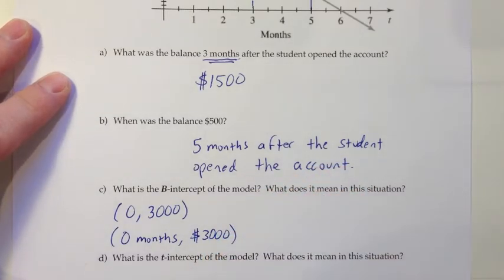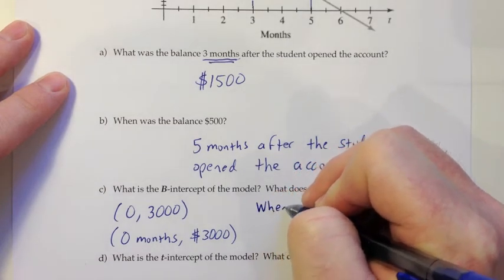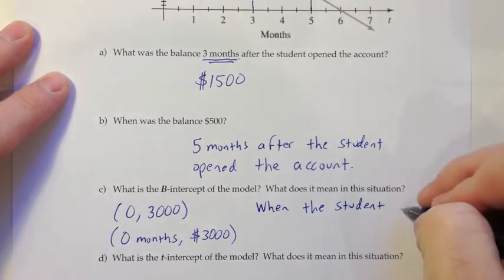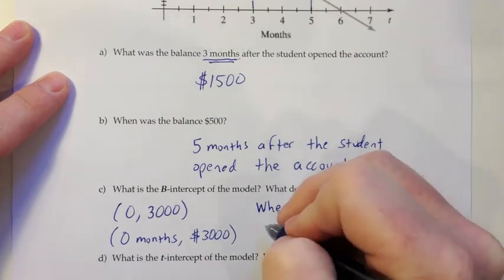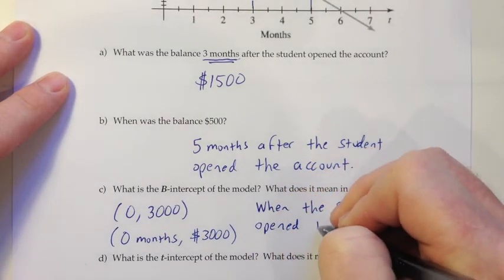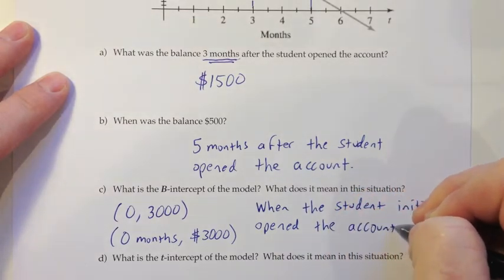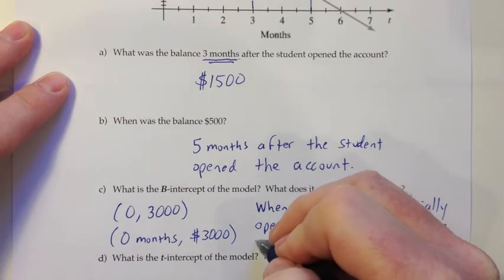So just thinking then about what that means. 0 months has gone by since they opened the account. So this means when they initially opened the account, there was $3,000 in there. So when the student initially opened the account, there was a balance of $3,000.